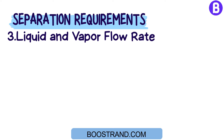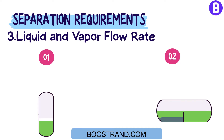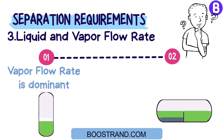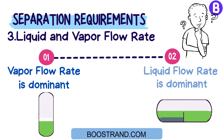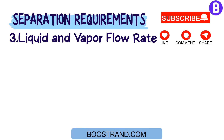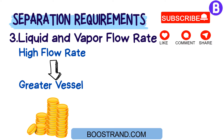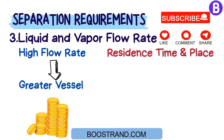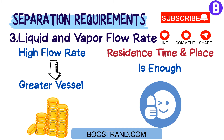Liquid and vapor flow rates affect the type of separators, whether they are vertical or horizontal. When the vapor flow rate is dominant, we usually go with a vertical separator. However, if the liquid flow rate is dominant, it would be better to use a horizontal vessel. In addition, a high flow rate means greater vessel dimensions, to ensure that the residence time of the fluid in the vessel is enough and that there is enough space for separation to occur.